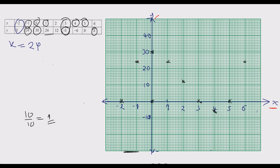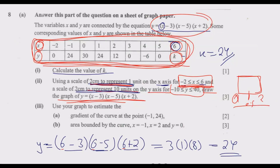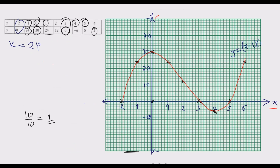Once you have all these points, the next step is to join them using a smooth curve as much as possible. Draw the smooth line joining all the plotted points. Then label the function properly: y equals (x minus 3)(x minus 5)(x plus 2). Once you do this correctly you get these three marks.